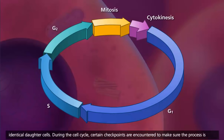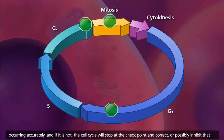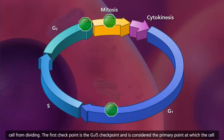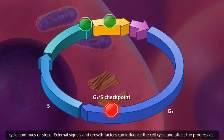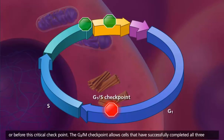During the cell cycle, certain checkpoints are encountered to make sure the process is occurring accurately. And if it is not, the cell cycle will stop at the checkpoint and correct, or possibly inhibit that cell from dividing. The first checkpoint is the G1S checkpoint and is considered the primary point at which the cell cycle continues or stops. External signals and growth factors can influence the cell cycle and affect the progress at or before this critical checkpoint.